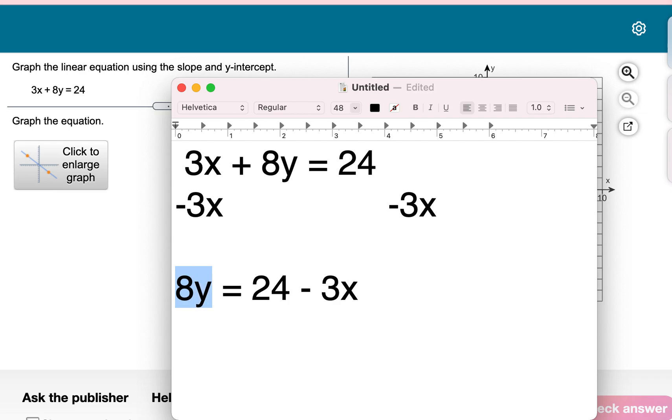8 is multiplying to y. So we can undo multiplication with division. We can do 8y divided by 8. That will make it cancel out and get us y by itself. But if we divide one term by 8, everything has to be divided by 8. So we've got to divide everything by 8 over here. 24 gets divided by 8, then negative 3 gets divided by 8.